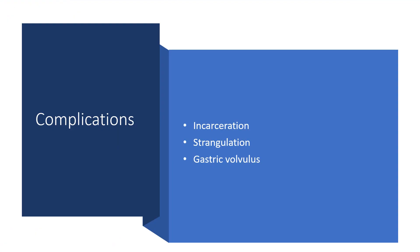What are the likely complications? Incarceration is very common in any hernia that is not repaired on time. Incarceration means the herniated tissue is arrested — it is not going back to the original cavity where it belongs. Over time, the blood supply will be cut off; that is strangulation. This will be very painful, and at that stage you need emergency surgery. There can also be gastric volvulus.